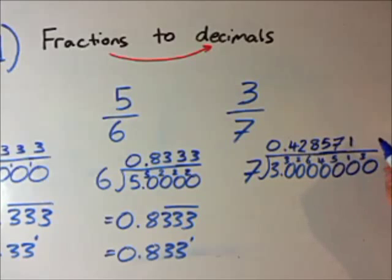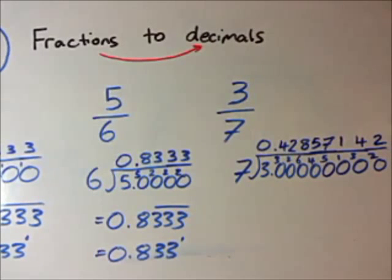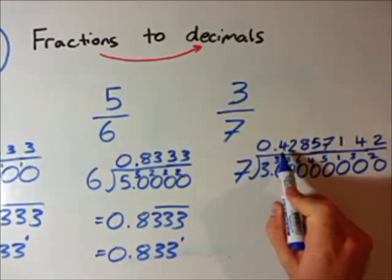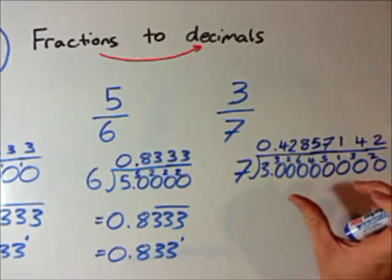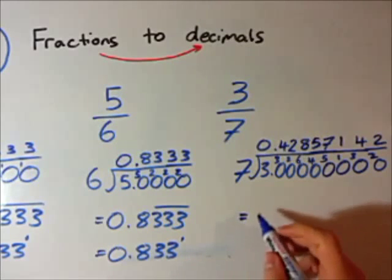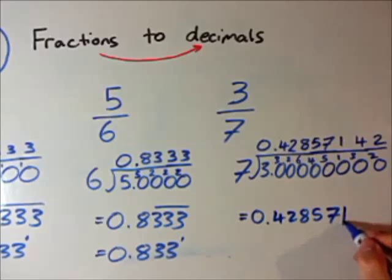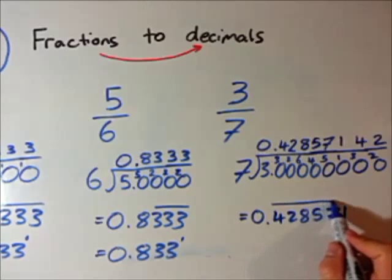How many times does 7 go into 30? That's 4 with a 2 remainder. You might start seeing a pattern here. How many times does 7 go into 20? 7 goes into 20 two times. For the sake of length I'll cut it there, but you'll realize that .428571 is the recurring part. This is a longer recurring, but it's good to know. If I continued, it would keep going 4, 2, 8, 5, 7, 1 and so on. So my final answer here would be 0.428571 with a line drawn over all of it.